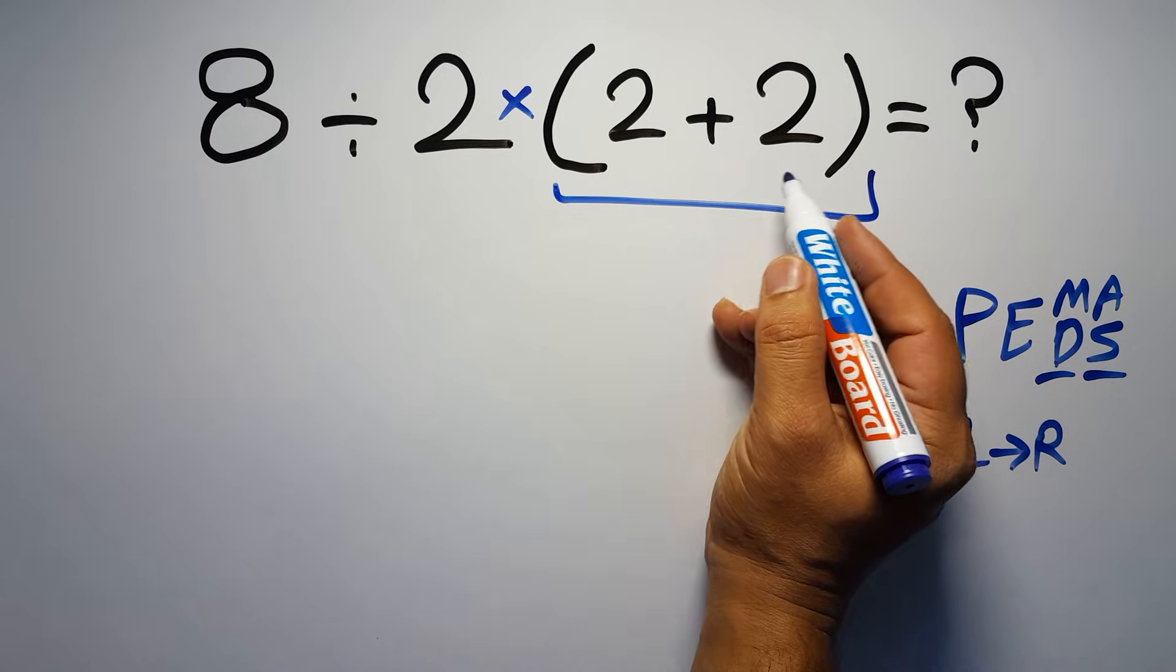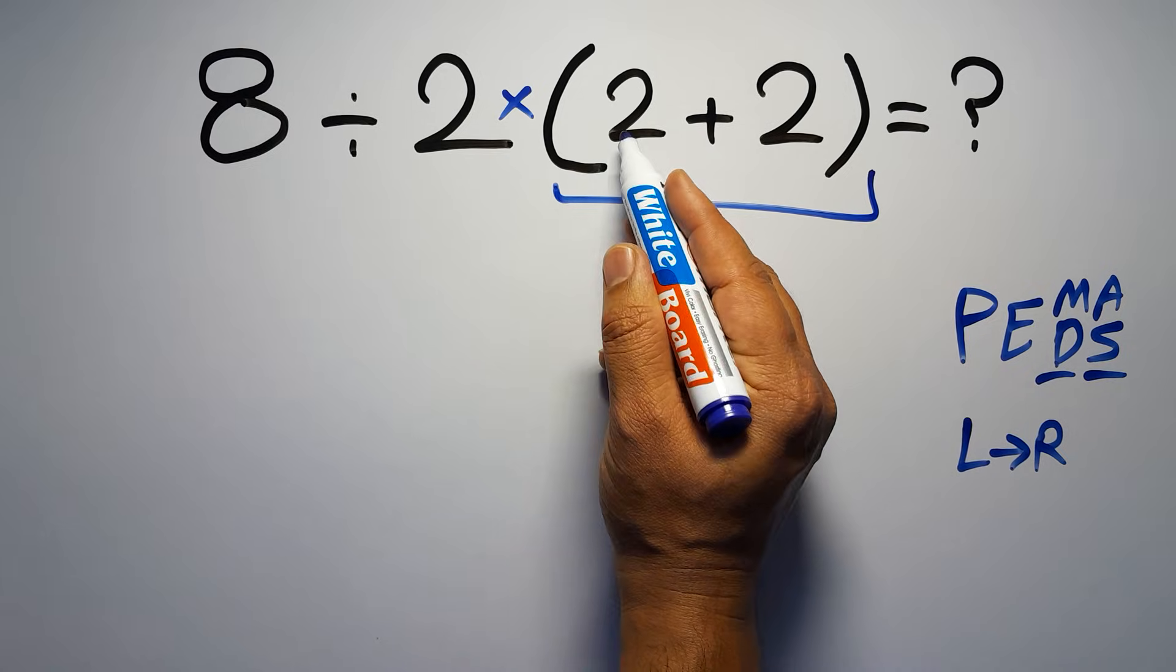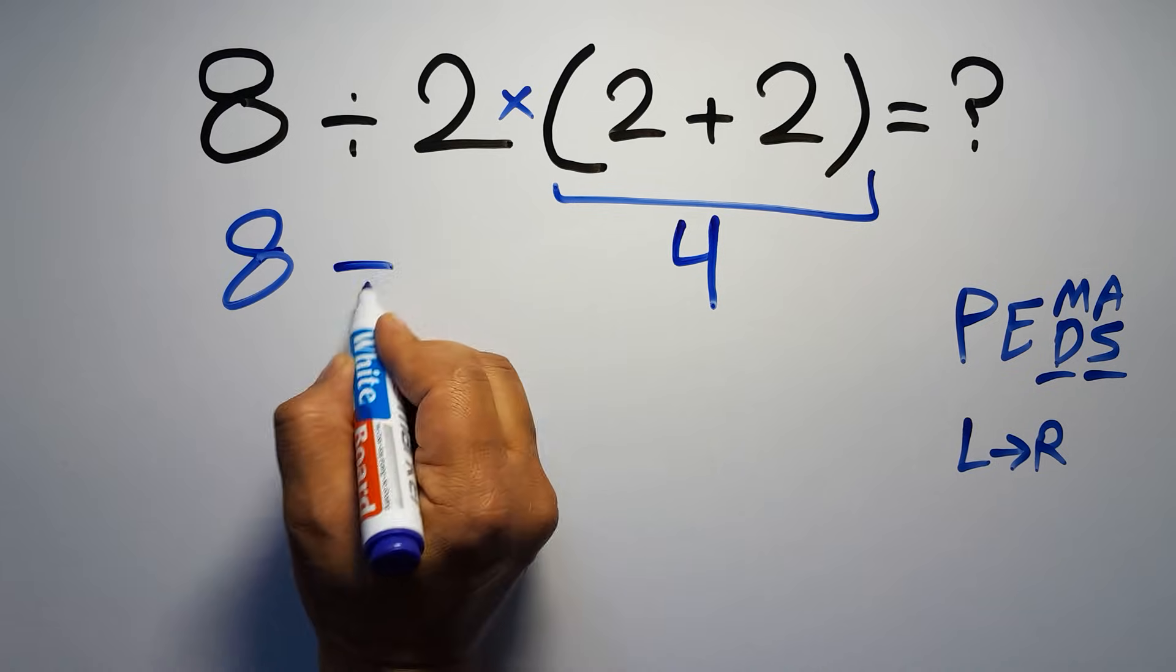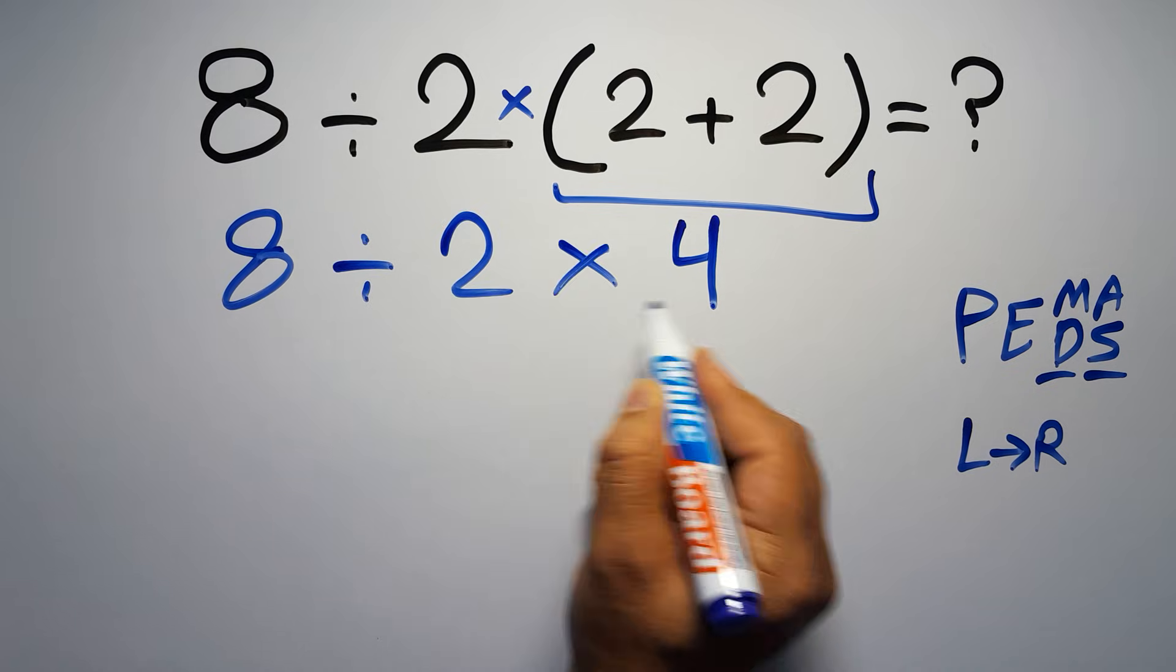So first we have to do this parentheses. Inside this parentheses, we have 2 plus 2, which equals 4. So 8 divided by 2, then times 4.